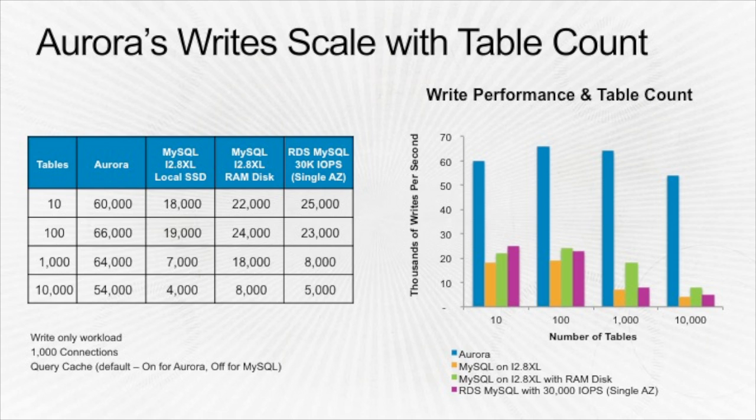For those running databases with large numbers of tables, scaling up the number of tables doesn't cause significant performance decline with Aurora like it does with other systems. Compared to an i2 8XL storage-optimized instance with fast local SSD — which saw performance drop off around 1,000 tables — and an RDS MySQL with a 30,000 IOPS volume — which dropped off quickly at the 1,000-table range — Aurora maintains performance even into the 10,000-table range.